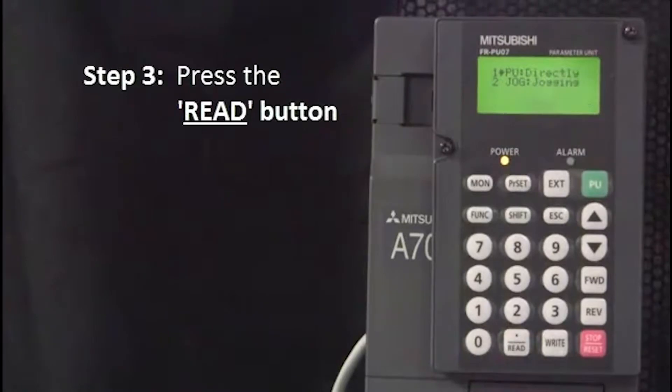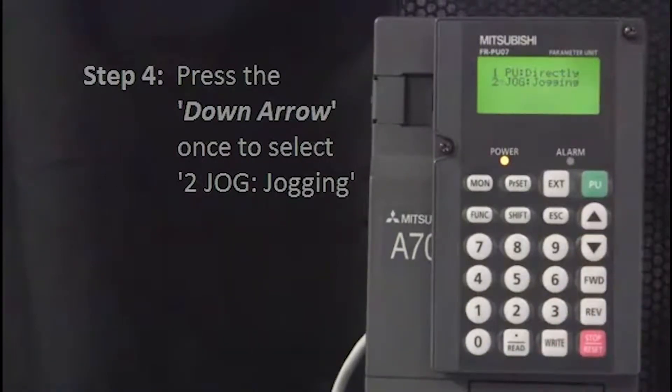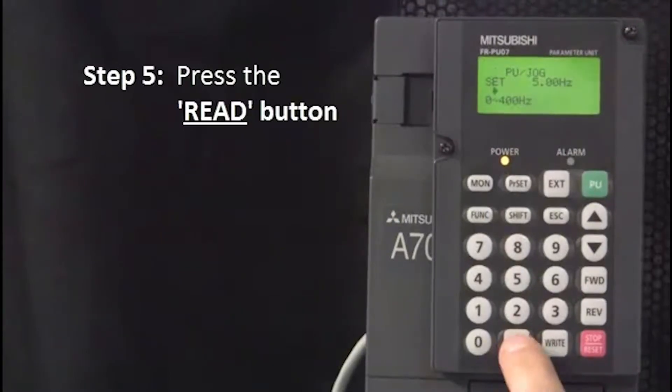The third step is to press the READ button. Press the down arrow once to select 2, jog jogging. Next, press the READ button.